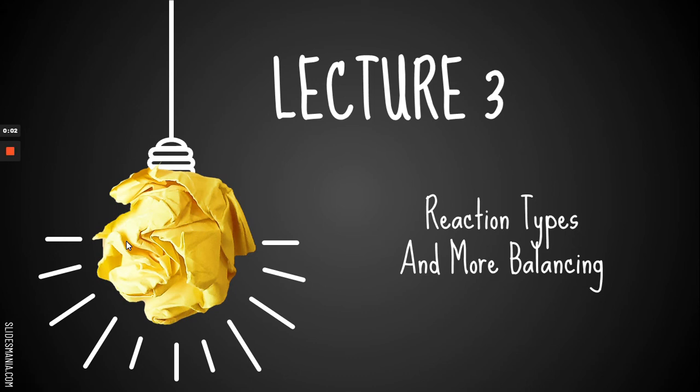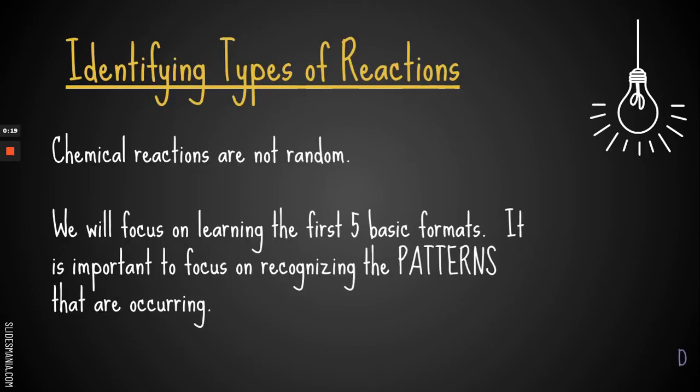In this lecture, we are going to be doing identifying reaction types, and at the end, we'll practice balancing a little bit more because it's important. You should have your note packet out. We're going to do the page with the letter D, identifying reaction types. It's important to recognize that just like chemical formulas are not random, chemical reactions aren't random either. They actually occur in really predictable patterns, and they follow the same kind of rules for forming ionic and covalent compounds that we've been learning about for the last month.